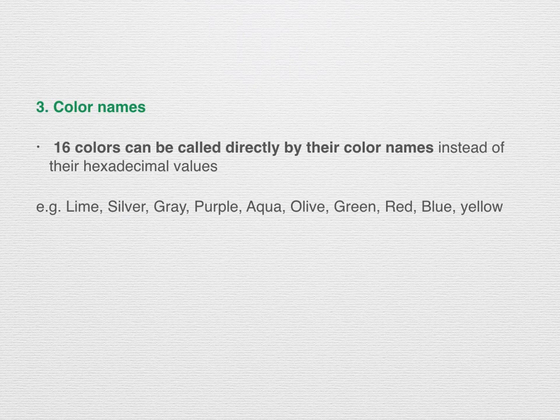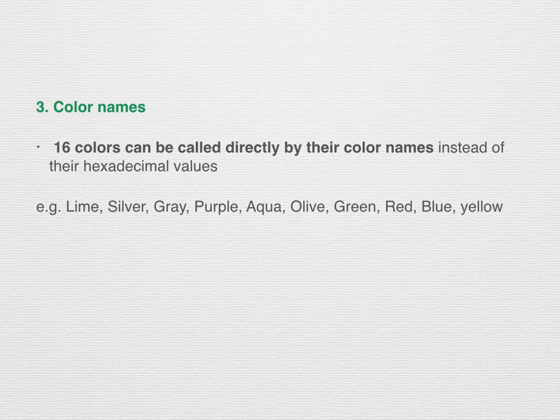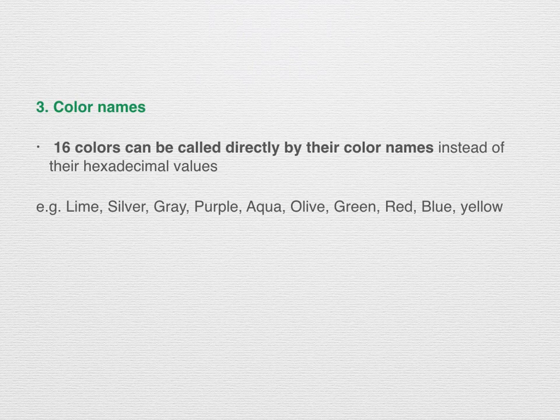The third W3C data type is color names. There are 16 colors that can be specified directly by name instead of using a hexadecimal value. Some examples include lime, silver, gray, purple, aqua, olive, green, red, blue, and yellow.